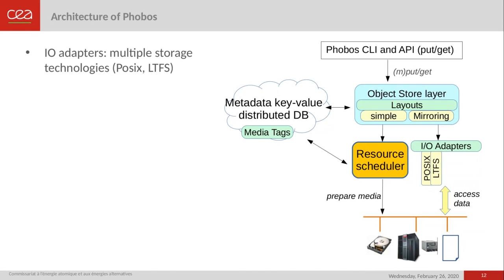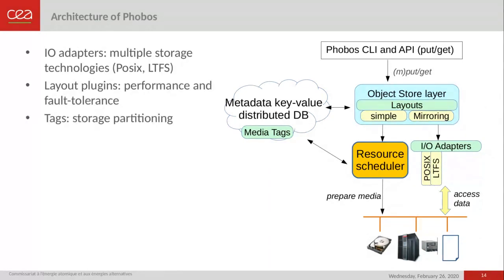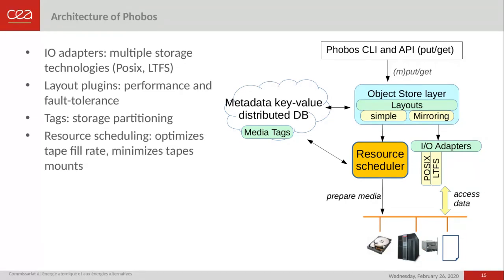The object store layer allows implementing layout plugins to achieve different levels of performance and fault tolerance. For example, we have a RAID-1 mirroring layout able to store objects as a fixed number of replicas in different tapes. Using Phobos, one can label each media with any tags of their choice, implementing a convenient storage partitioning strategy. For example, we can identify and separate LTO7 from LTO8 by a simple tag, or separate media from different physical locations such as different libraries, buildings, or sites, and also separate media from different funding sources — just by adding tags to each media.